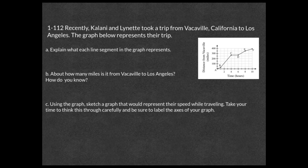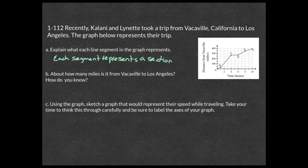On problem 1-112, Kalani and Lynette took a trip from Vacaville, California to Los Angeles. The graph represents their trip. Each line segment represents a section of the trip and the speed at that point — because the distance covered means in some instances it takes less time, with each segment traveling at a specific speed.